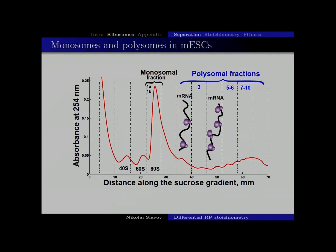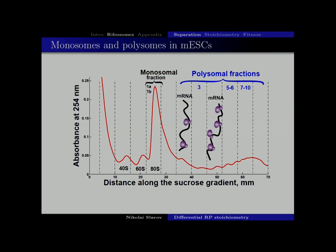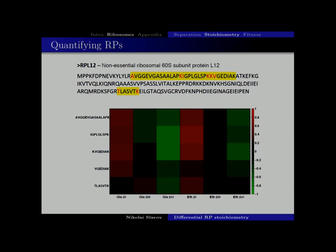I did something very similar with mouse embryonic stem cells, again isolating their ribosomes on sucrose gradients. Then I physically took the separate fractions and quantified all of the proteins using quantitative mass spectrometry. I'll take a minute to talk about the technique and some potential concerns and artifacts so that we can really understand what the data mean and not over-interpret them.